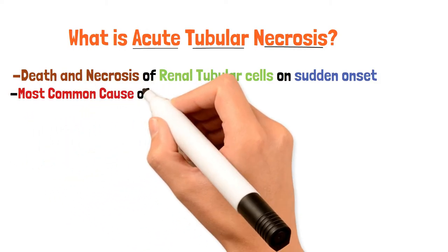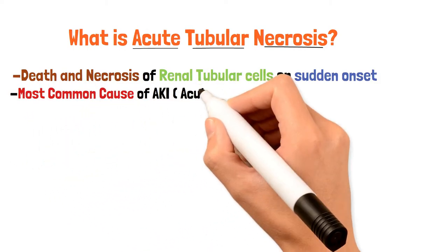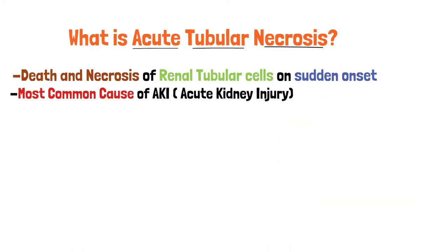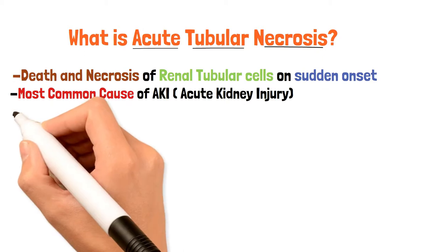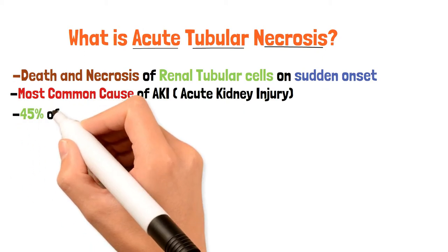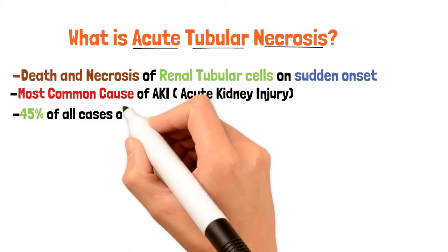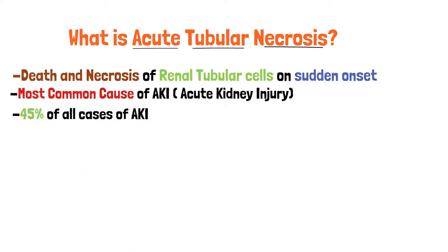Acute tubular necrosis is the most common cause of acute renal injury. Statistically speaking, 45% of all cases of acute kidney injury are caused by acute tubular necrosis.